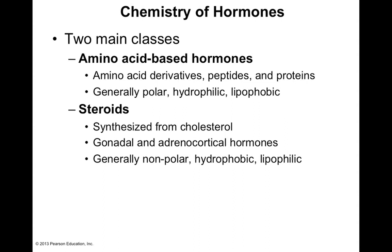There are two main classes of hormones: amino acid-based hormones and steroids. Amino acid-based hormones are made from amino acids — you can have amino acid derivatives, which are simpler molecules, as well as multiple amino acids together to form peptides, and then long chains of amino acids which can form proteins. These amino acid-based hormones are generally polar, which means they dissolve well in water and therefore are also hydrophilic — water-loving — and lipophobic, or fat-fearing.